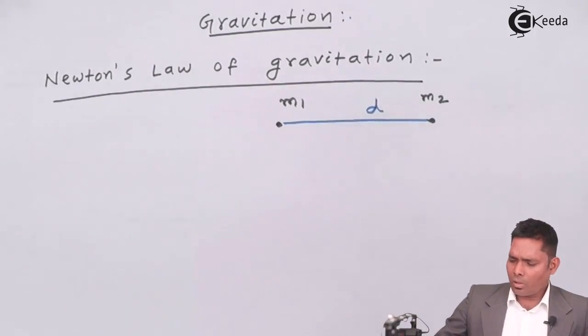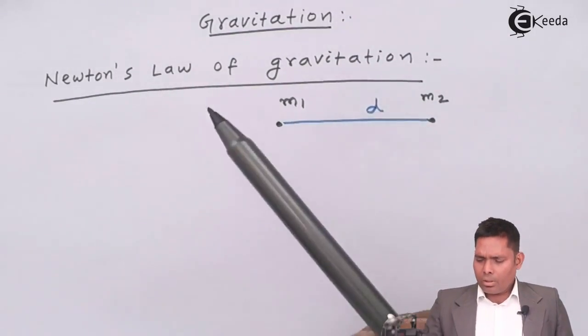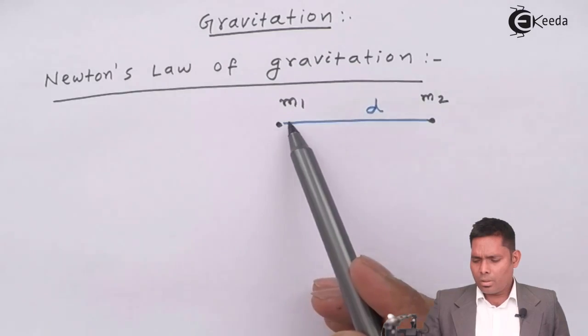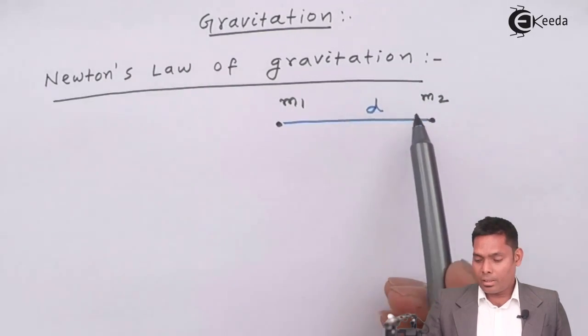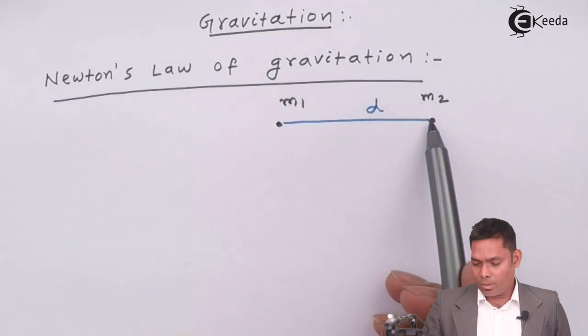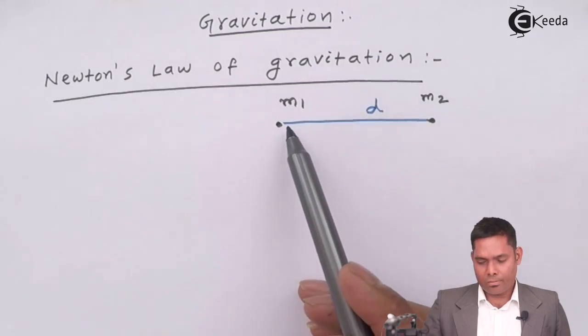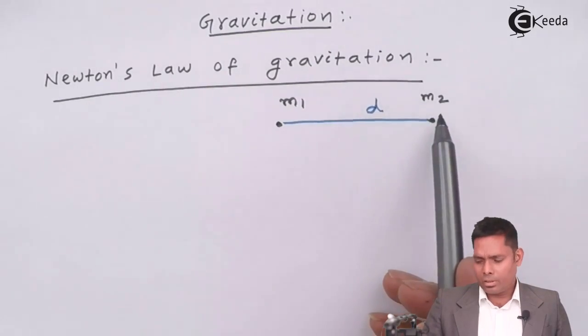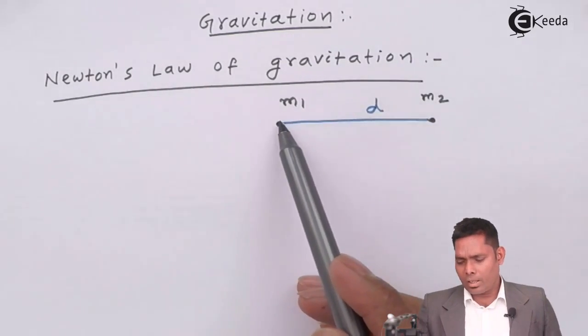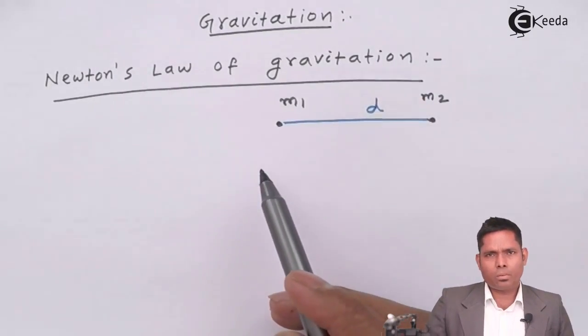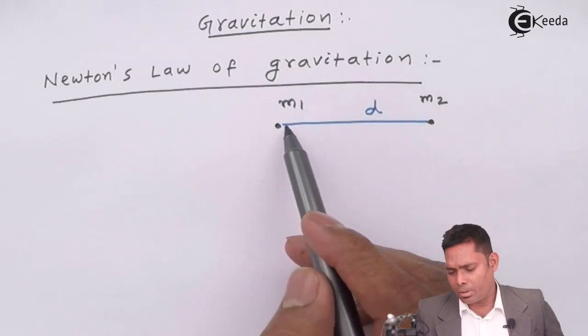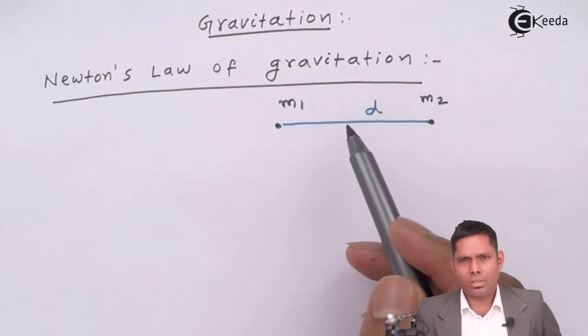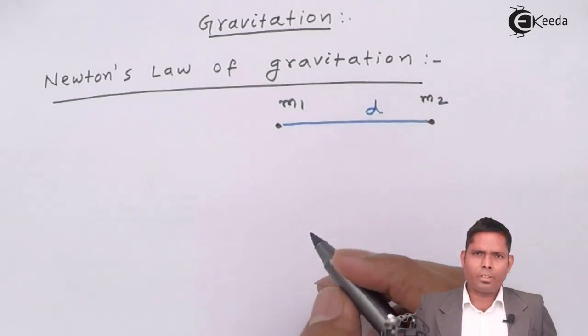Then this law states that this mass will apply a force which is attractive in nature on this mass, that means this mass will pull this mass towards itself and vice versa. This mass also will exert the same amount of force in terms of magnitude in the opposite direction, that means towards this mass. The force involved is always attractive.